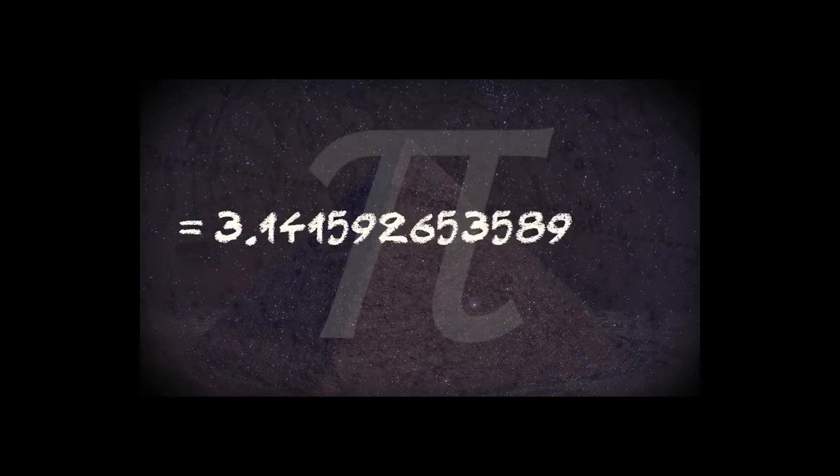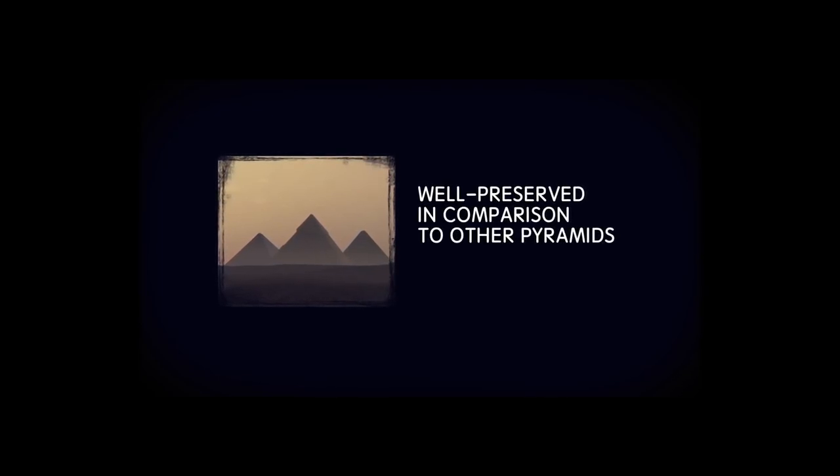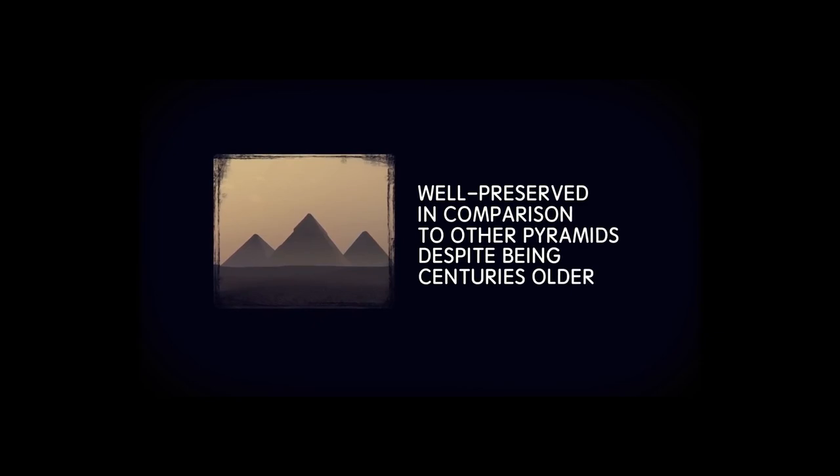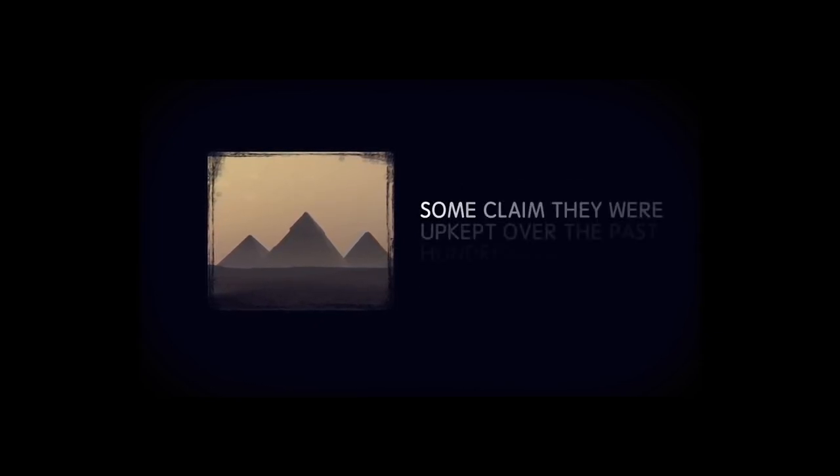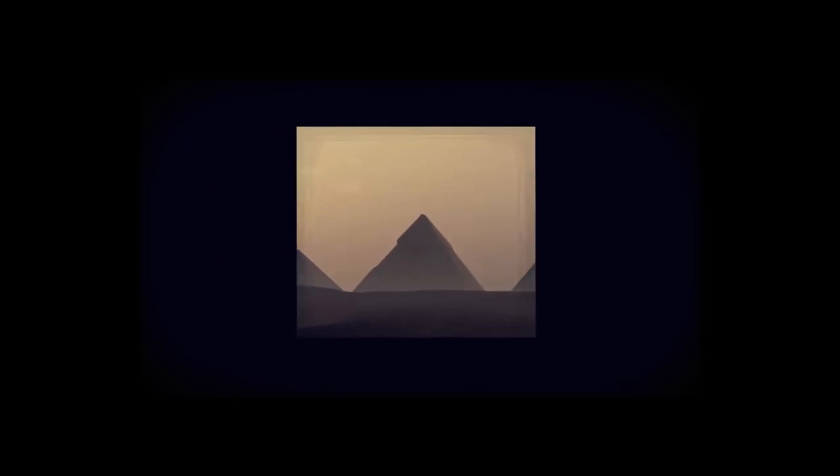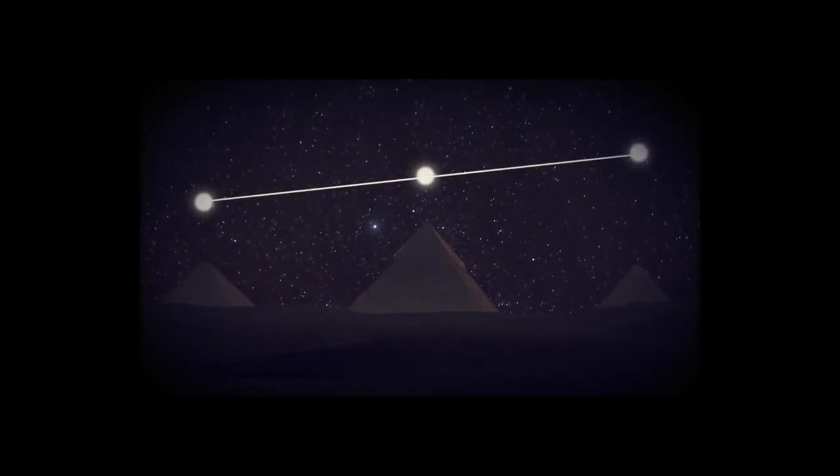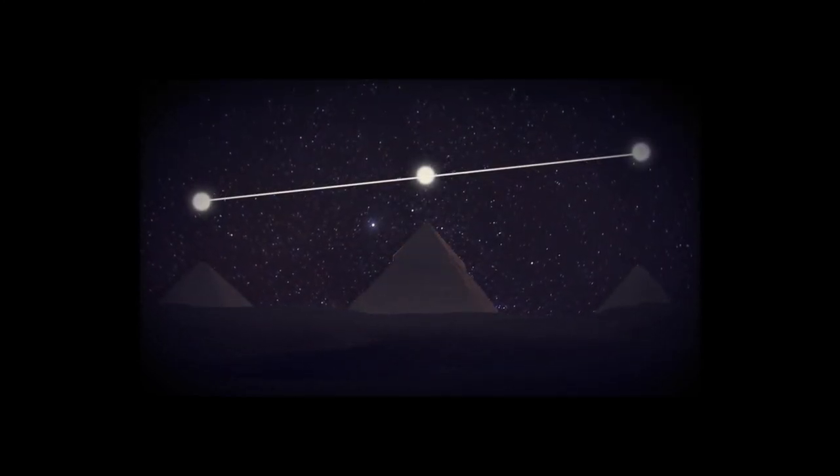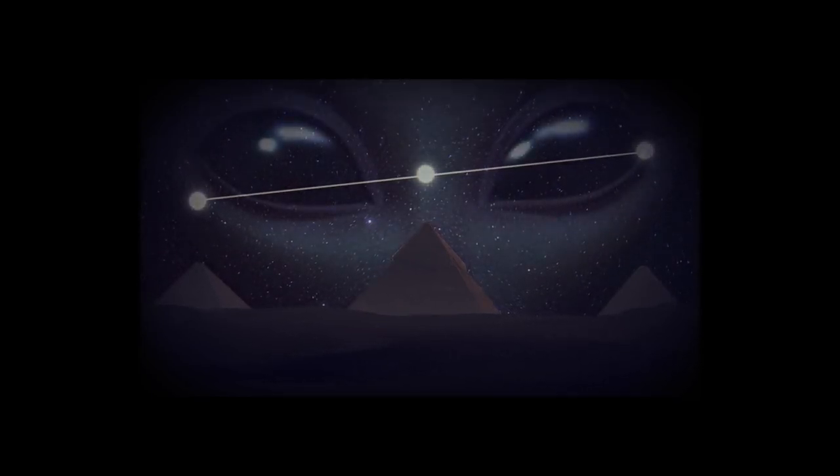The Pyramids of Giza are also considerably well preserved in comparison to other pyramids around the world, despite the Pyramids of Giza being centuries older. Some have claimed this is due to the fact that they were upkept over the past hundreds of years, though others believe it is a sign of unearthly preservation. Finally, the three pyramids align with the pattern of Orion's belt, a fact that some consider an impossible feat for the Egyptians to accomplish, unless of course they were building based on instructions.